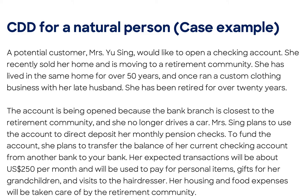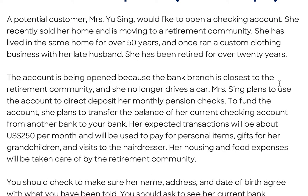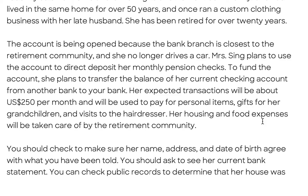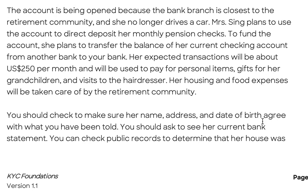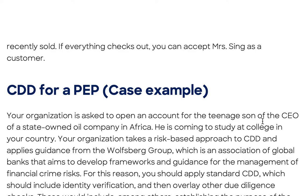CDD for a natural person — case example. A potential customer, Ms. Yu Singh, would like to open a checking account. She recently sold her home and is moving to a retirement community. She has lived in the same home for over 50 years and once ran a custom clothing business with her late husband. She's been retired over 20 years. The account is being opened because the bank branch is closest to the retirement community and she no longer drives a car. Ms. Singh plans to direct deposit her monthly pension checks and transfer the balance of her current checking account. Her expected transactions will be about $250 per month for personal items, gifts for her grandchildren, and visits to the hairdresser. You should verify her name, address, and date of birth, ask to see her current bank statement, and check public records to confirm her house was recently sold. Everything checks out — you can accept Ms. Singh as a customer. Normal and straightforward.